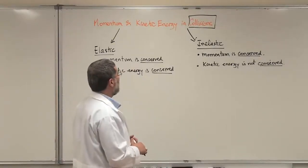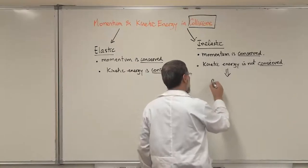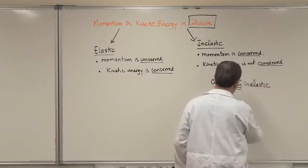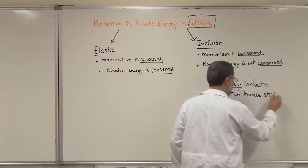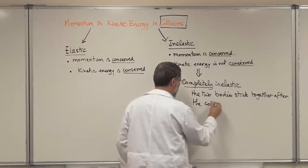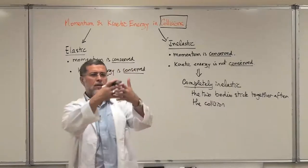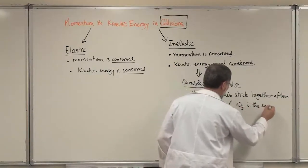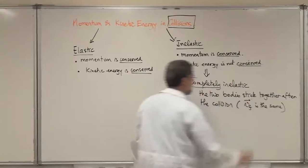We have one special case called completely inelastic collision. In the completely inelastic collision, the two objects or two bodies stick together after the collision. So when your problem says it is a completely inelastic collision, the two objects come together, stick, and go with the same velocity. They have V_final the same for both objects — they go as one object with one velocity V_final.